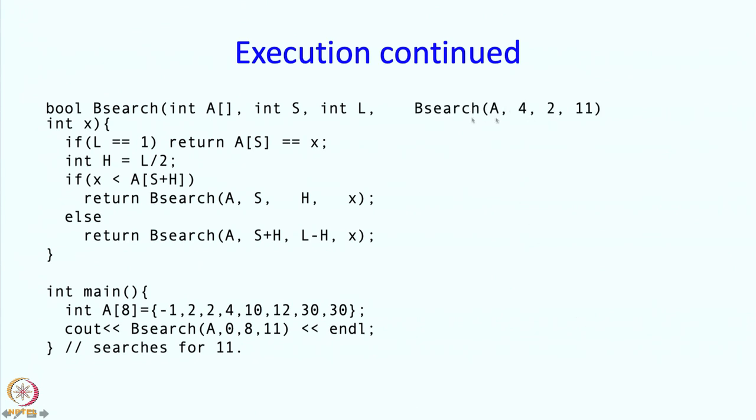Again the variables in the activation frame will take values: S will take value 4, L will take value 2, these come directly from the arguments, X also will take value 11. Then we are going to execute this statement, but L is not 1, it is 2, so nothing will happen, then we move on to this. H will become 1, half of L, and then we are going to execute this.